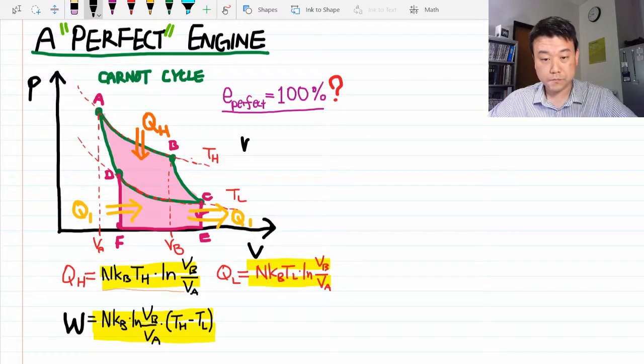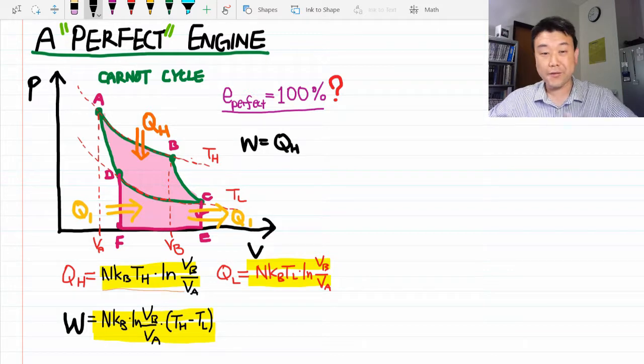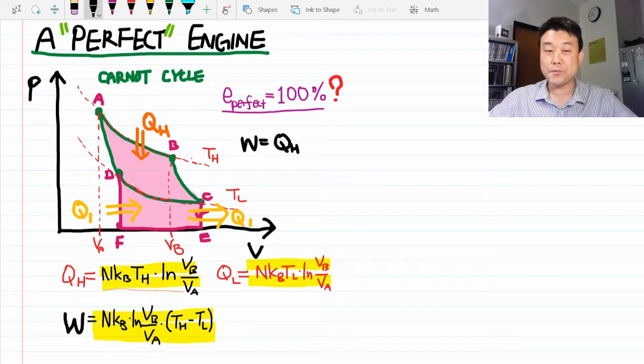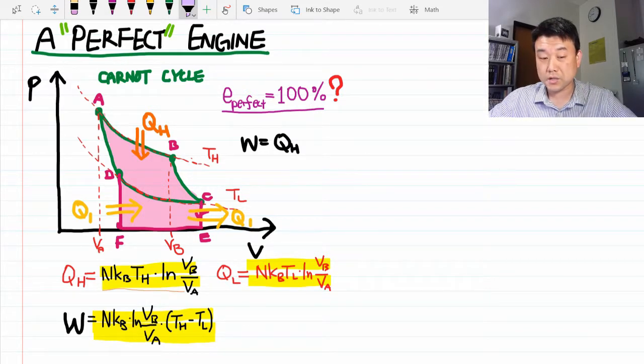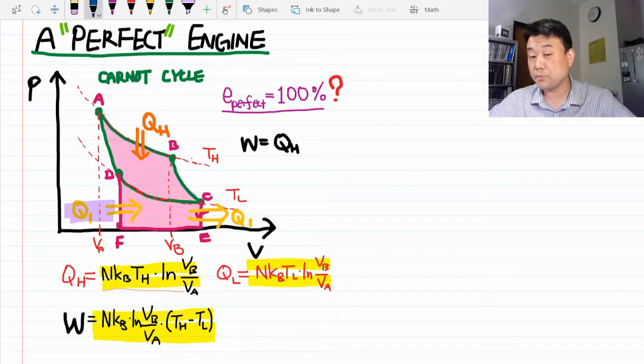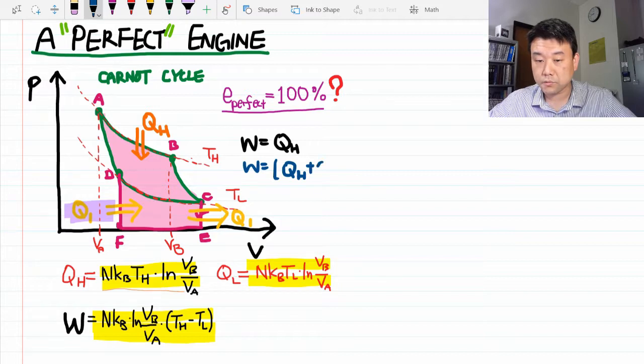Now, if you are thinking, oh, work done is QH, so it's not 100% efficient, that's not quite right. Because with this modification, in addition to the QH, this amount of Q1 is also an input heat. So it's more like, work done is QH plus Q1 minus Q1.